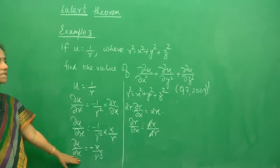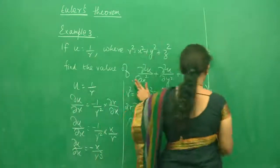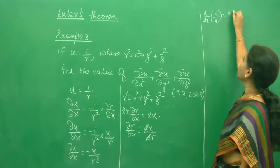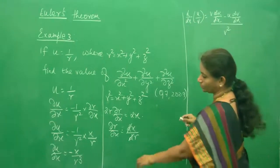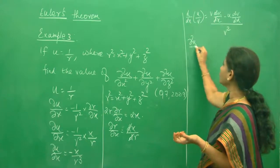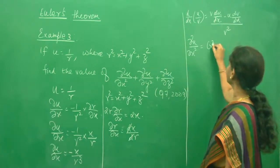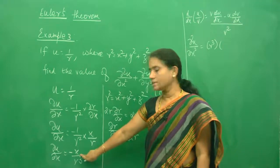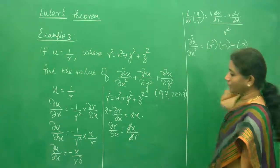Now I am going to differentiate this once more with respect to x to get ∂²u/∂x². I am going to follow the u/v quotient rule: d/dx(u/v) = (v · du/dx - u · dv/dx) / v². The numerator is -x and the denominator is r³. So ∂²u/∂x² = r³ · d/dx(-x) - (-x) · d/dx(r³), divided by (r³)². The derivative of -x with respect to x is -1.